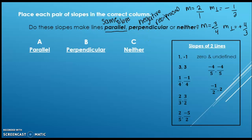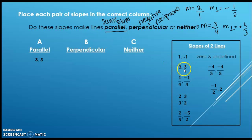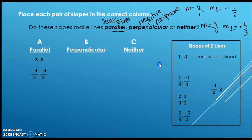Let's take a look at the answers. So first of all, parallel is three comma three, because it's exactly the same. Our other parallel slope was negative four-fifths and negative four-fifths — exactly the same.